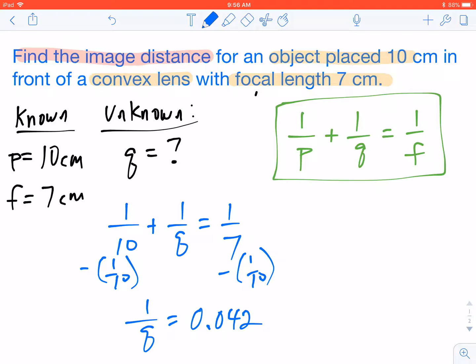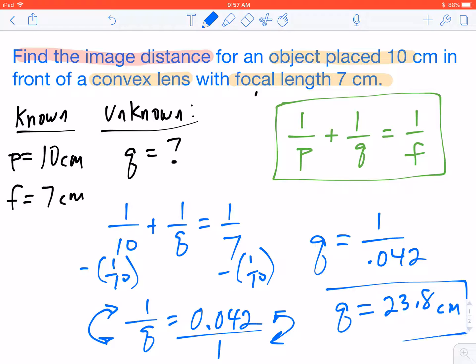So the easiest way to get q all by itself in this case is to just reciprocate our fraction. So instead of it being 1 over q, we'll flip the fraction. Our math rules say that whatever you do to one side, we have to do to the other. So we will also flip this fraction. So our q ends up equaling 1 divided by 0.042. And it's not nice to leave that in the fraction, so we'll just go ahead and do that calculation in our calculator as well. And so we get an answer of 23.8 centimeters as our final answer.